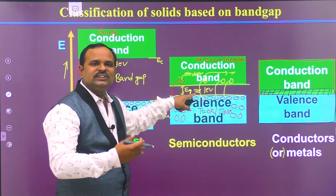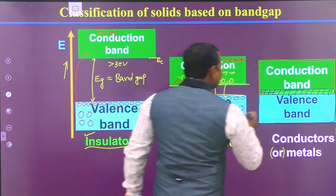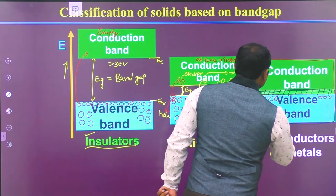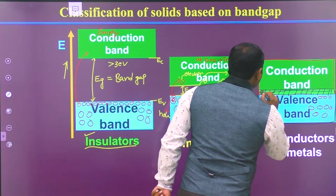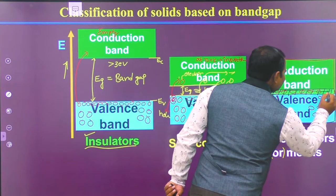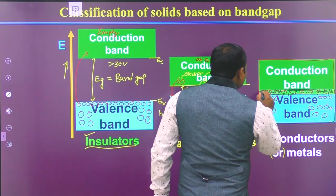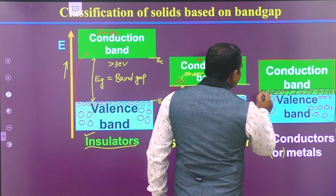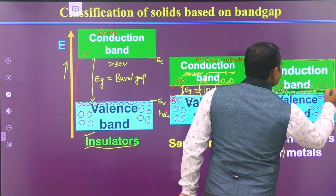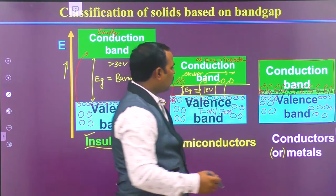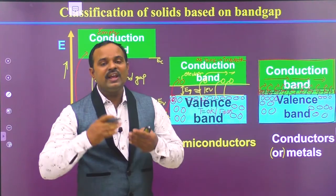The band gap is very small in semiconductors, so it is easy to excite electrons from the valence band to the conduction band. When it comes to metals, the valence band and conduction band are overlapping. The overlapping region already has valence band electrons, and without giving any energy, these electrons can go into the conduction band easily because of the overlapping energy bands.